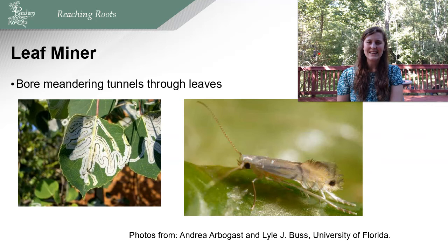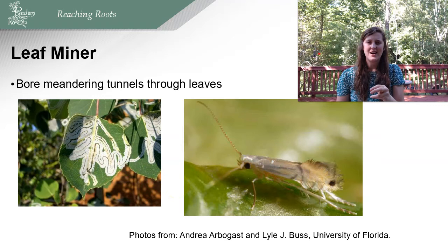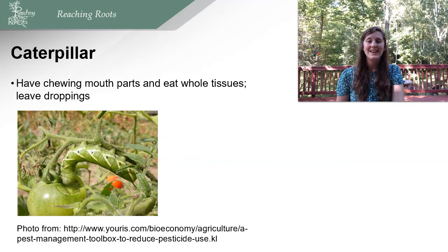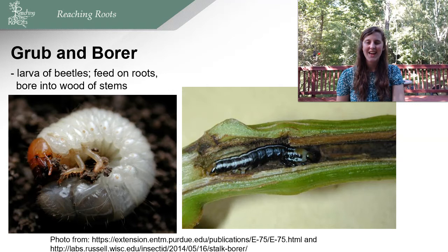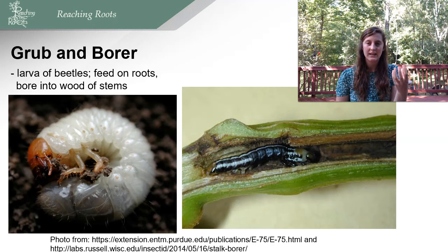A leaf miner travels within the leaf, boring meandering tunnels through it — the damage looks like winding trails through the leaf tissue. Caterpillars have chewing mouth parts, eat whole tissues, and leave droppings — you might find caterpillar frass on your tomato plant even if you don't see the caterpillar. Grubs and borers are larvae of beetles that feed on roots and can also bore within stems — this is a huge issue because the stem becomes less sturdy and can fall over in even light winds.